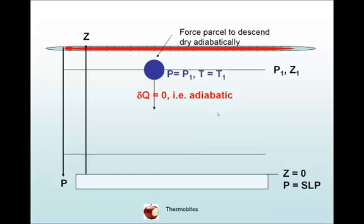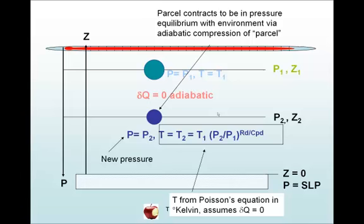Then we force the parcel to ascend dry adiabatically. So there are no phase changes and no exchange of heat between the parcel and its environment. And so we end up with a parcel of new pressure P₂ and a new temperature T₂.